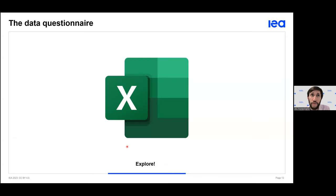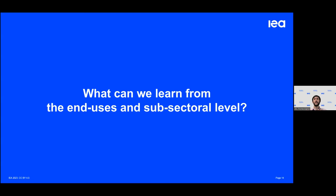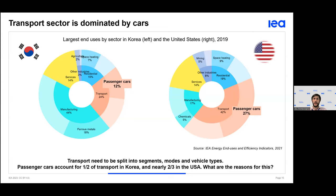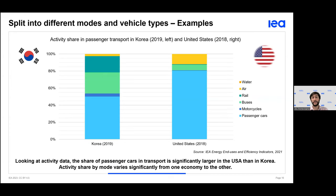Now that we've seen what we collect, let's look at what we can learn from this data. In the transport sector, passenger cars are the most energy-consuming vehicle type — accounting for about half of Korea's transport energy consumption and nearly two-thirds in the USA. Looking at activity data, cars account for a higher share of passenger activity in the USA, about 80%, compared to Korea at about 50%.